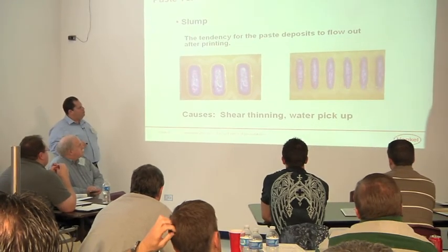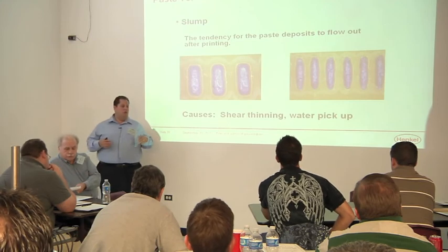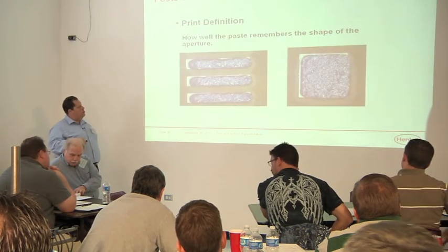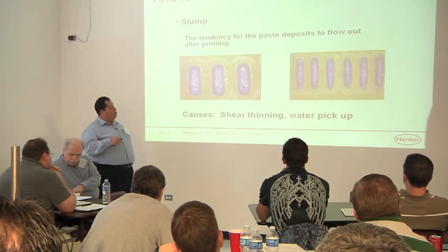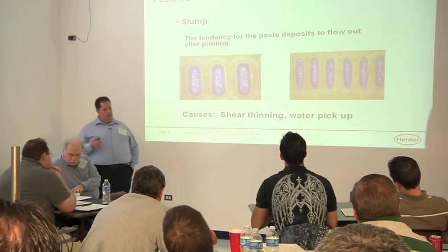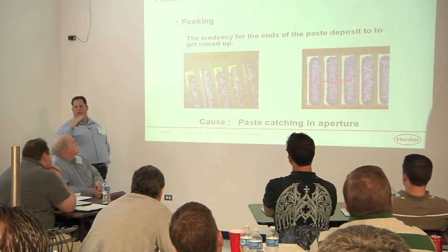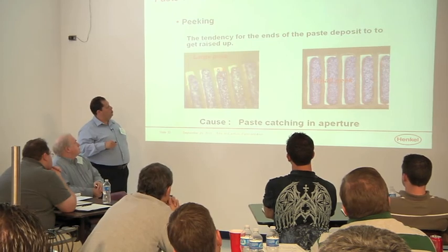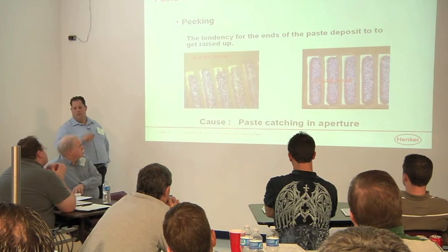Another thing that can happen - we talked about paste being worked and shear thinning and hysteresis. If a paste isn't designed very well, or it's being used in an environment it's not designed for, or that hysteresis curve is falling down quickly, you could get slump - where instead of a nice brick deposit with well-defined edges, you start to see a slumpy, goopy mess. Where pitches are getting a lot smaller, slump leads to bridging and other issues. Peaking is another thing - dog ears - where paste catches in the aperture and doesn't release well, giving you a dog ear or peak effect. It's a paste that should have been on the board, now sticking up, which can fall over and lead to a bridge, or leave you with an insufficient deposit on the toe or heel.